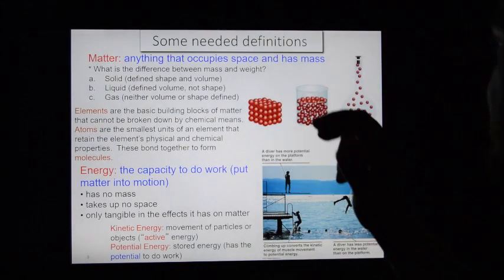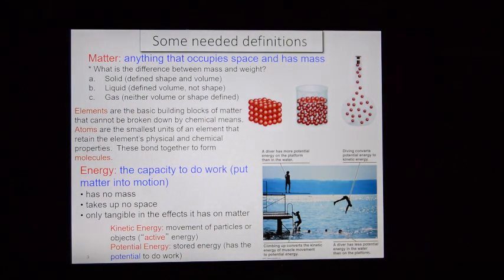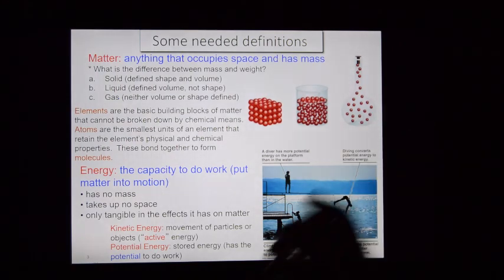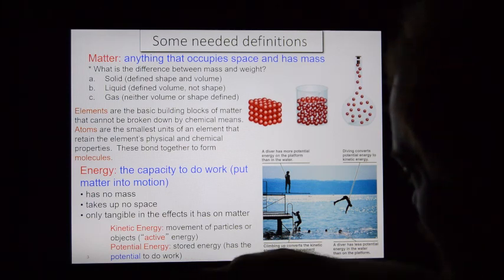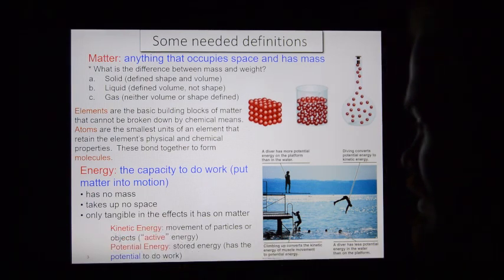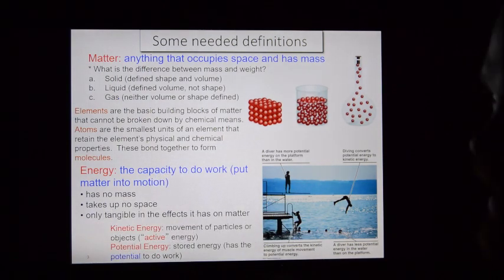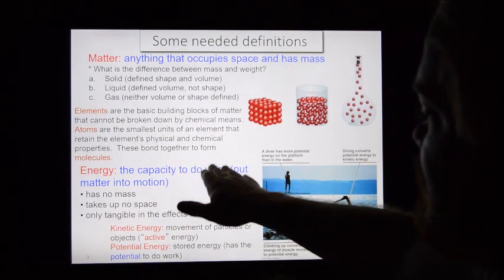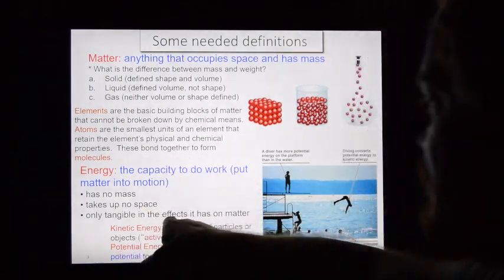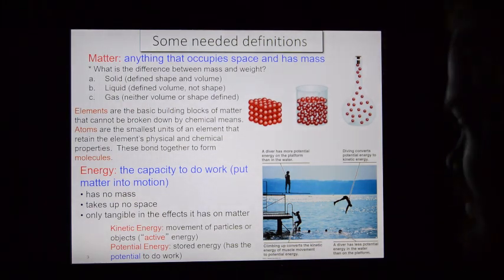Matter and energy — this is a super important concept. Matter is anything that occupies space and has mass: good old-fashioned solids, liquids, and gases. This table, this phone — that's matter; it occupies space. Energy is not that way. Energy is only tangible in its effects upon matter. It is the capacity to do work — no mass, no space — just the ability to do things, governed by energetic efficiencies.